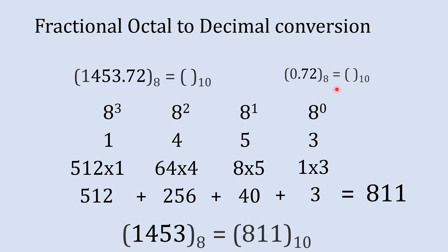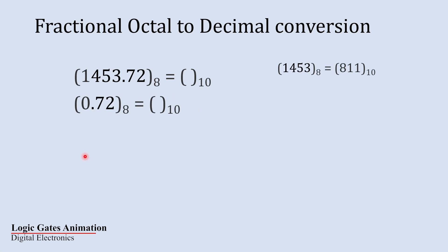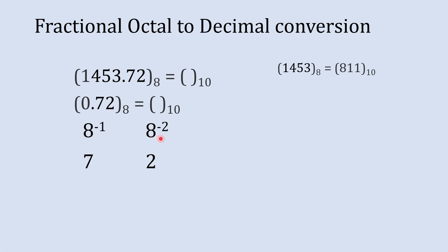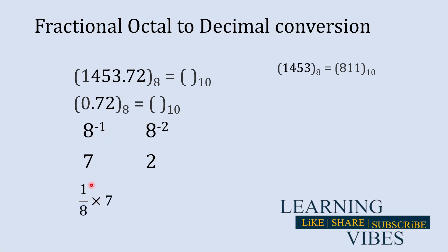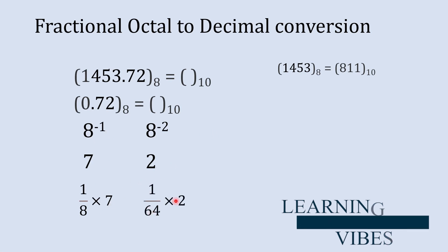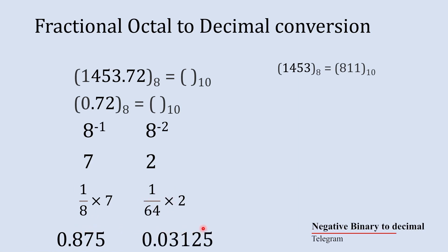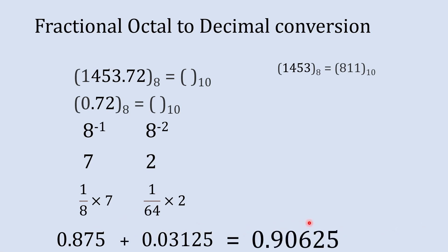Now it's time for the fractional number part. We write the fraction digits 7 and 2, and in the fractional part we start with the leftmost digit, which is 7. We multiply 7 by 8 to the power minus 1, and the next digit 2 by 8 to the power minus 2. So 8 to the power minus 1 times 7 is 1/8 times 7, giving 0.875, and 1/64 times 2 gives 0.03125.